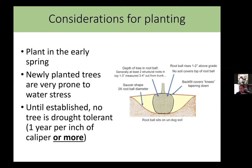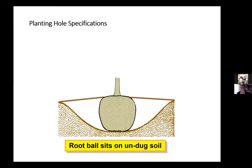There are several good studies showing that starting with smaller plant material — five years down the line — will yield a larger plant than if you had started with something bigger. The biggest thing after that is what I call the science of hole digging — there is actually quite a science to how to dig a correct planting hole for a newly planted tree.